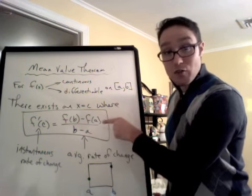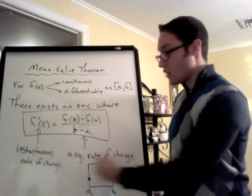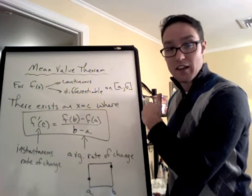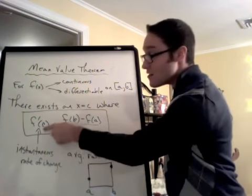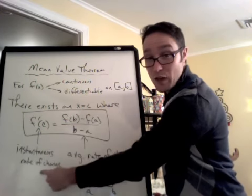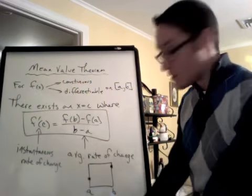Now, this should look familiar to you, right? This is the average rate of change, the average slope between a and b. It's just the line, the secant line connecting the two. And this is the derivative, or the slope of the tangent line, instantaneous rate of change. So basically, graphically, here's what it's saying.